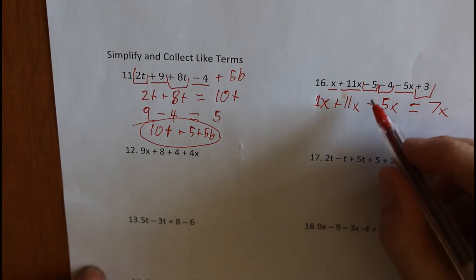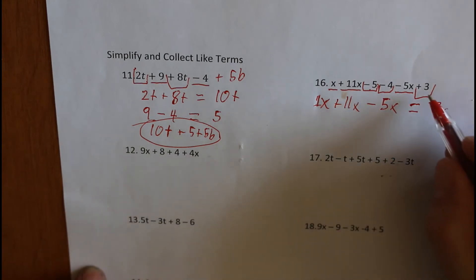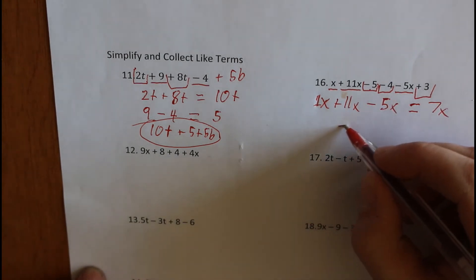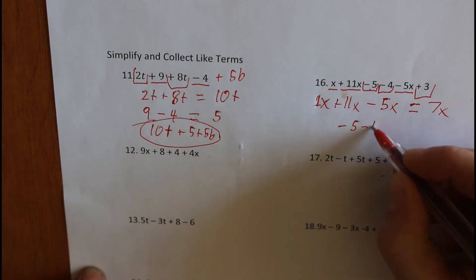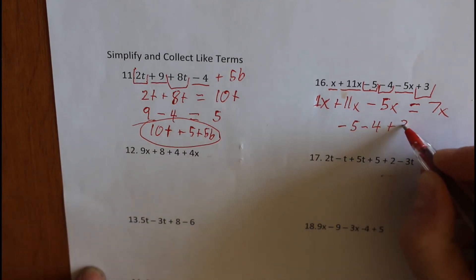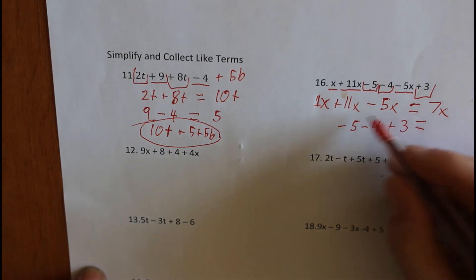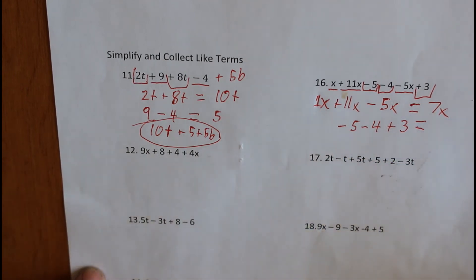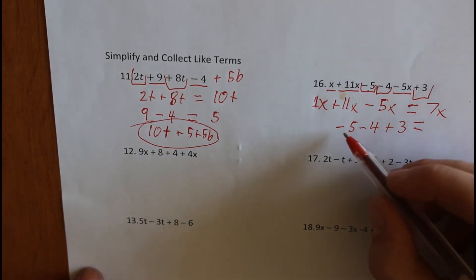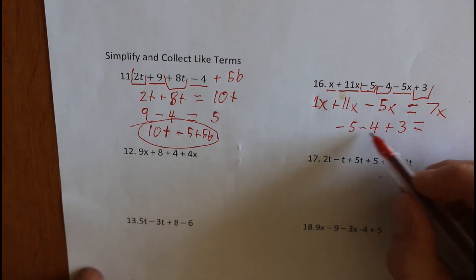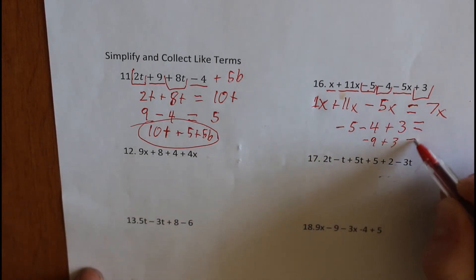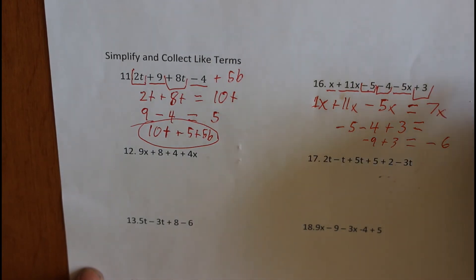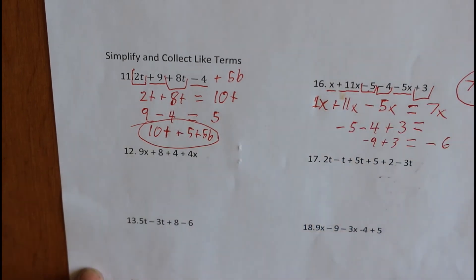The next one we have: negative 5, take away 4, plus 3. You can use a calculator if you want — I prefer mental math, but you're definitely welcome to use a calculator. So negative 5 take away 4 is negative 9, plus 3 equals negative 6. And then we just put this all together: 7x take away 6. That will be your answer.